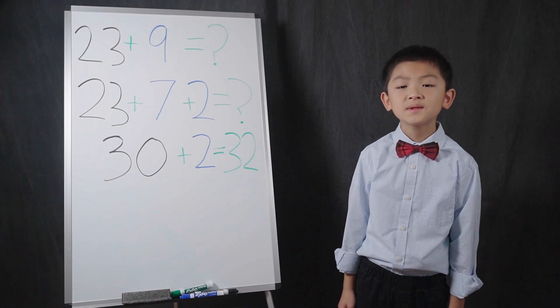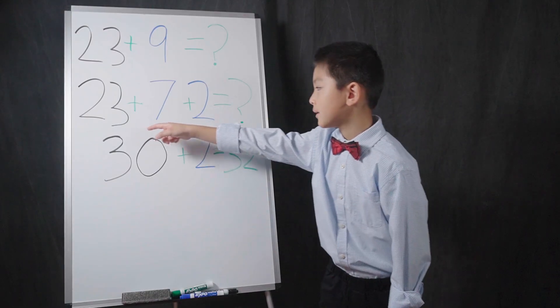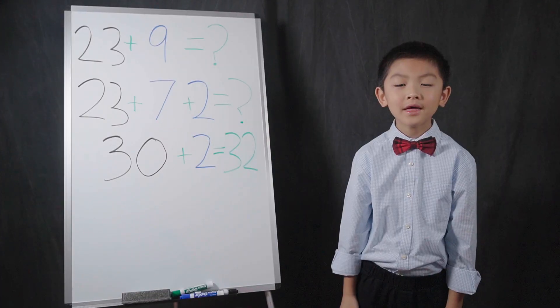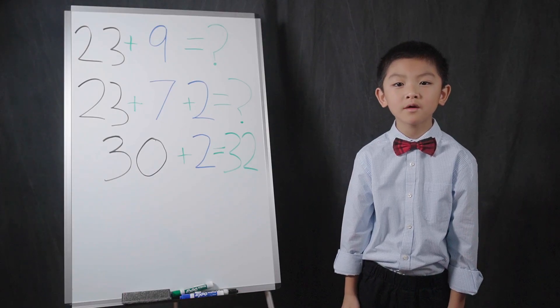Thus, this becomes 23 plus 7 plus 2. 23 plus 7 equals 30. Then, you add the leftover 2 to arrive at a total sum of 32.